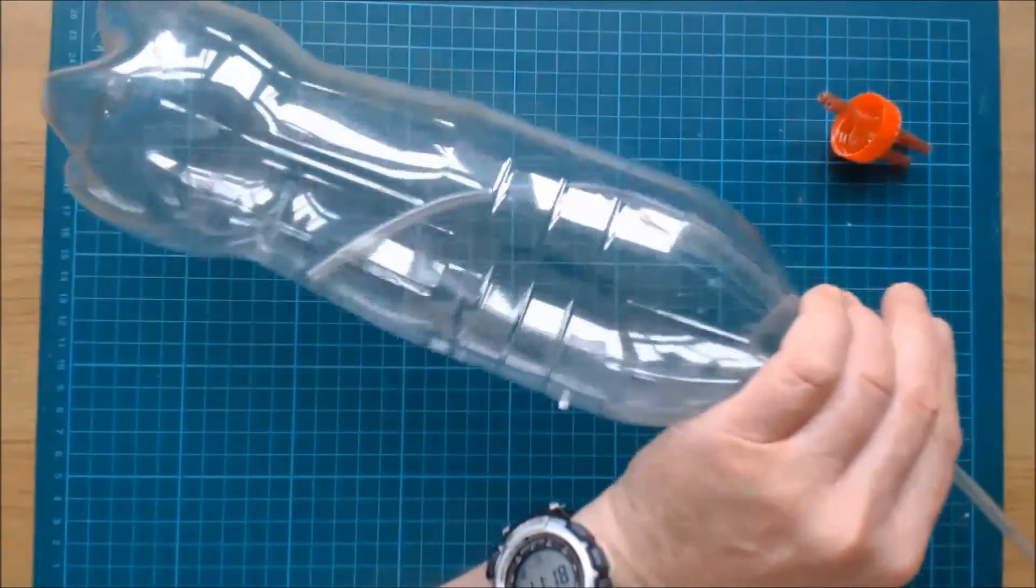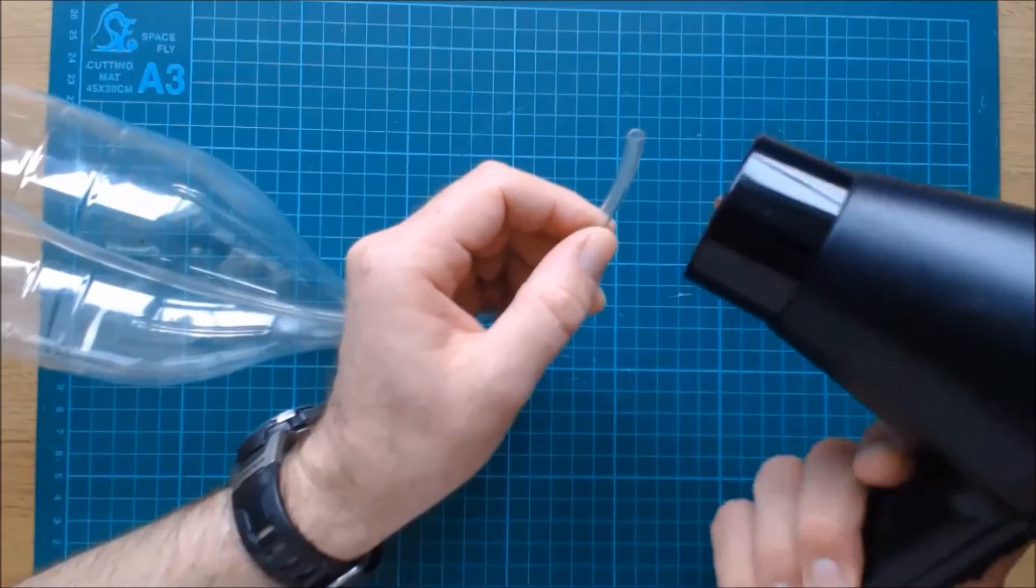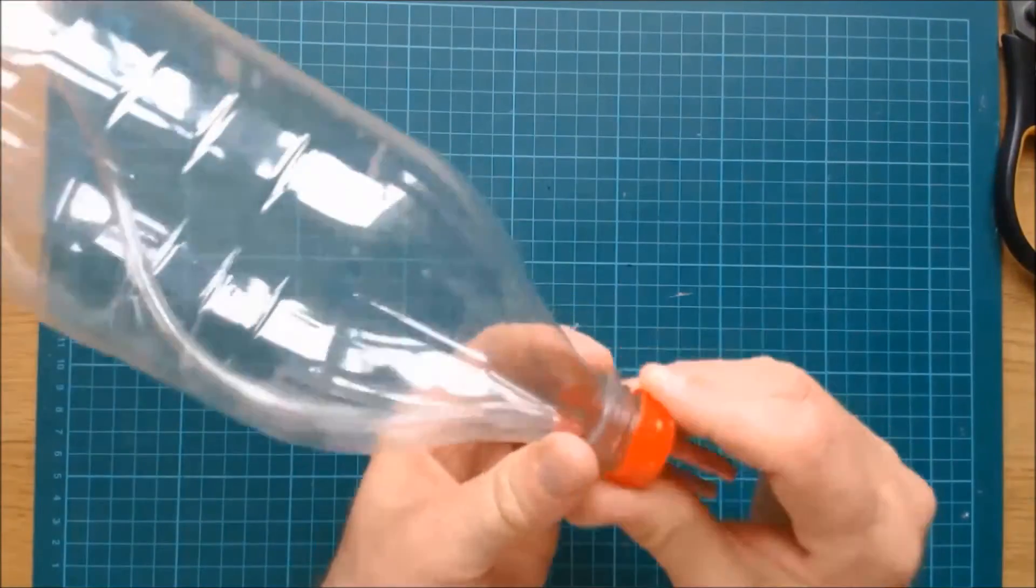Cut a length of pipe to reach all the way to the bottom of the first soda bottle. Using some heat to make the pipe flexible, fit the pipe to one of the two longer straws.